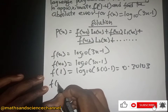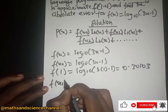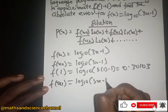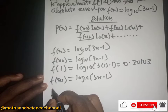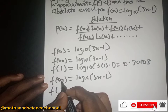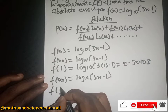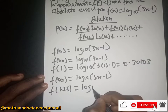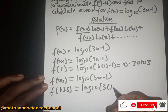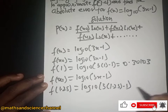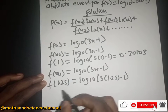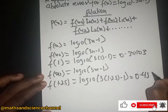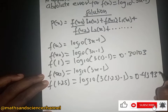For f(x₁), we have log base 10 of (3x - 1). x₁ was given as 1.25, so we have log base 10 of (3×1.25 - 1), and we get 0.43933.